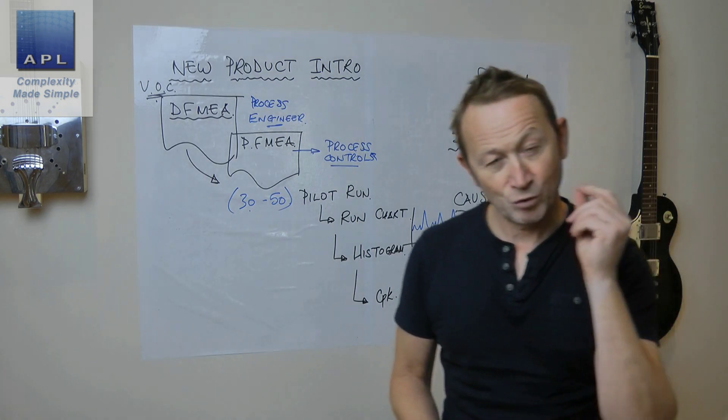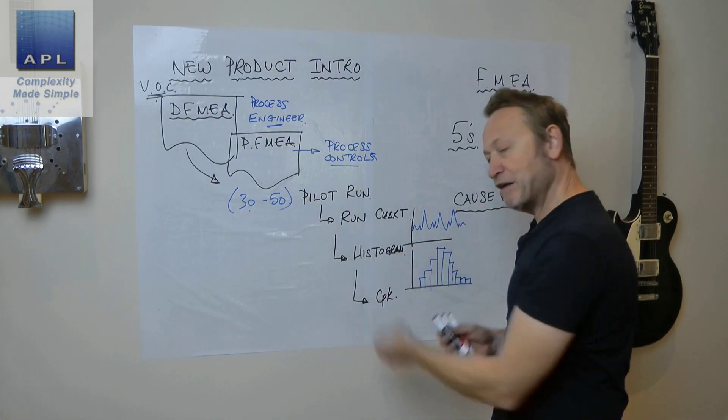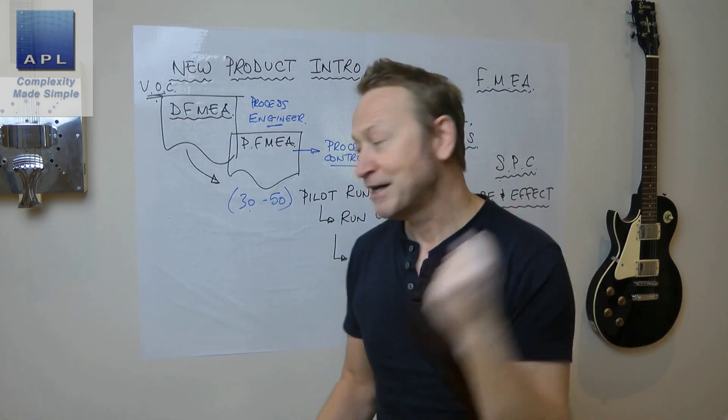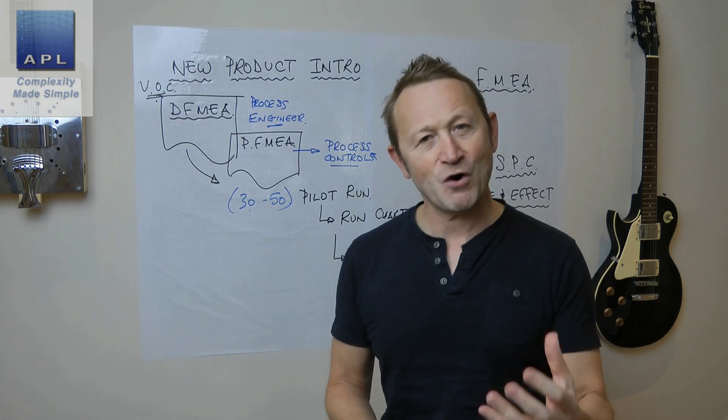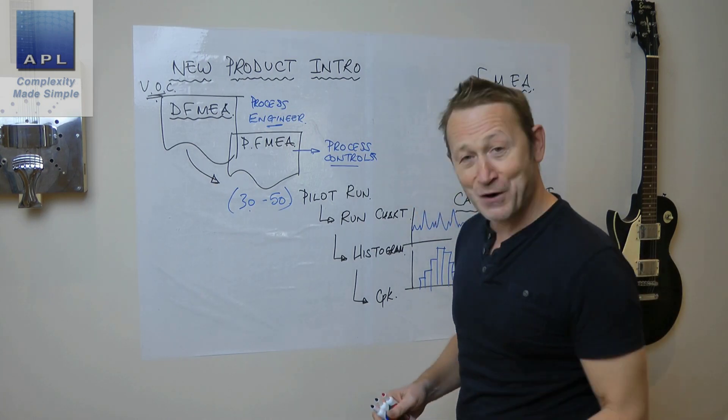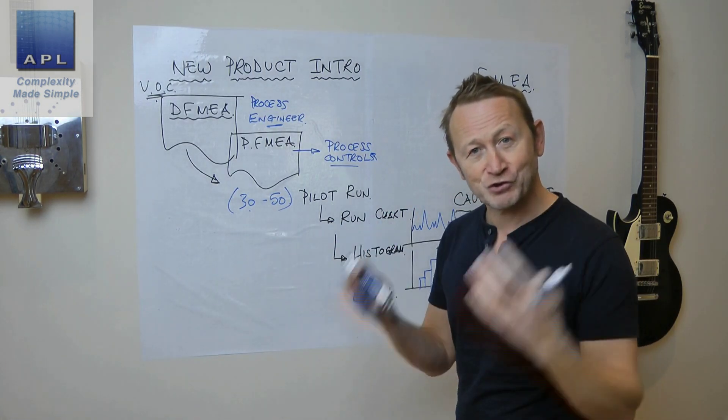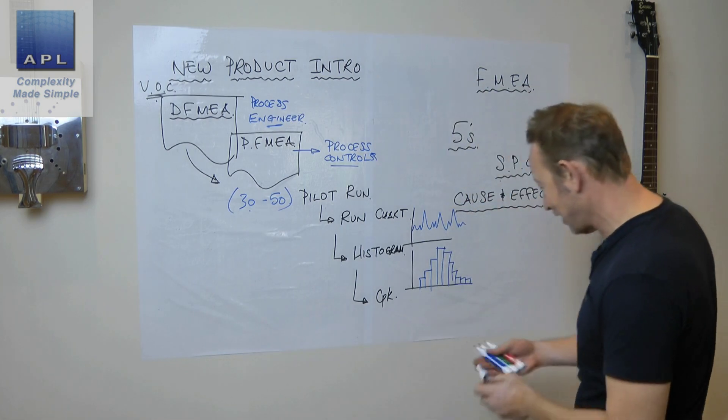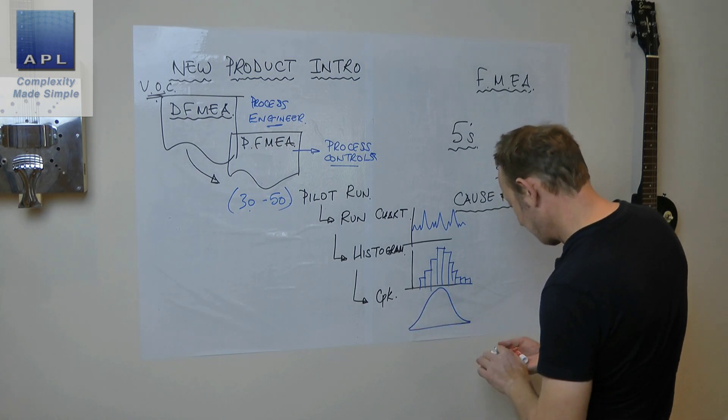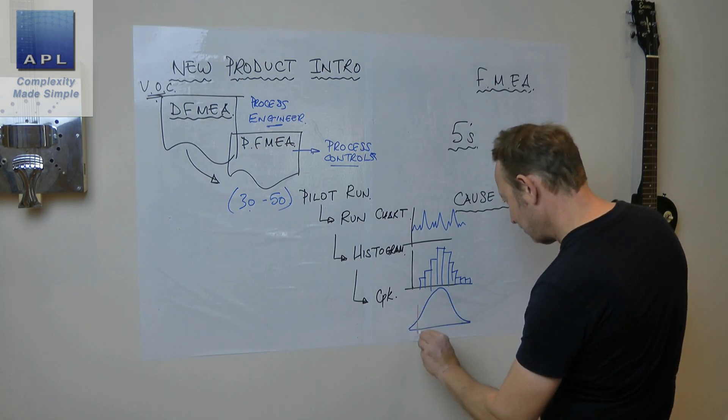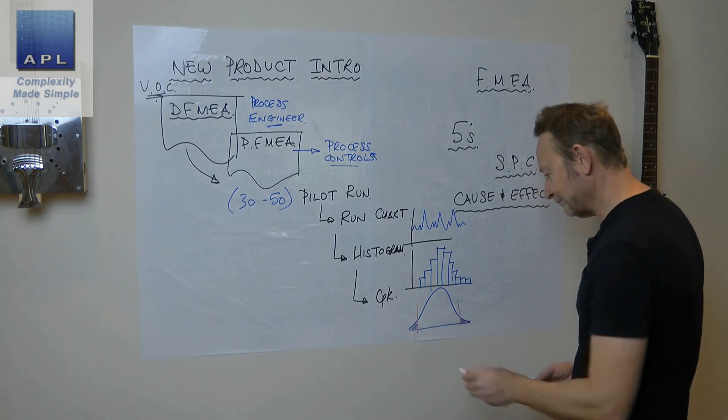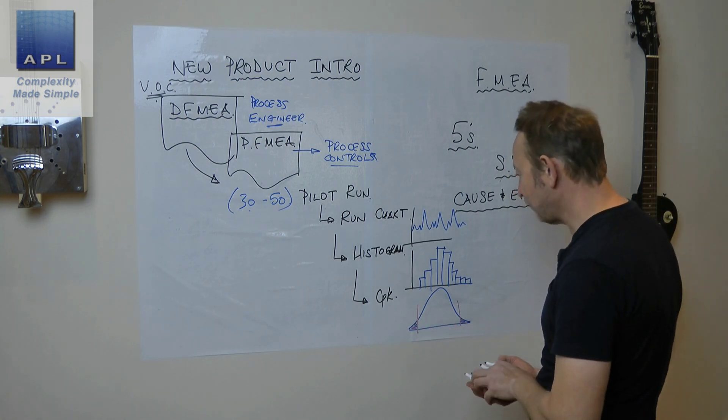I'm always going to use these three together. If I've got measurable data tolerances that I'm trying to work out the capability, can we make the process, can we make the product? It's a really important question to ask before you switch the process on and create piles of scrap and chaos. CPK diagram: are we capable?